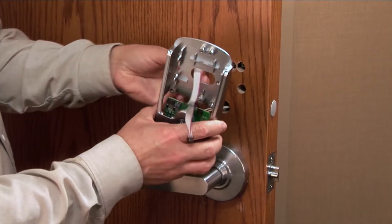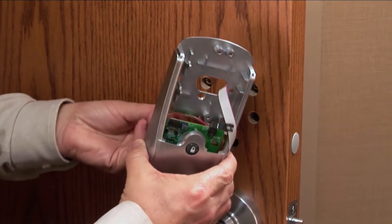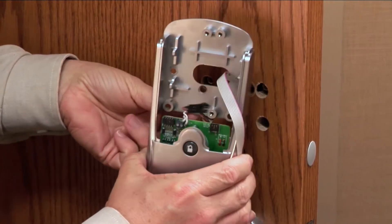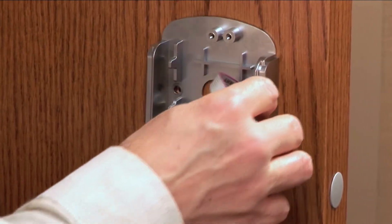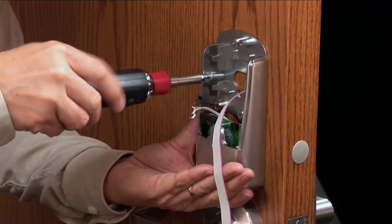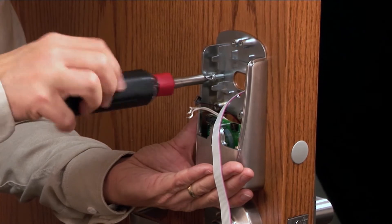Holding the inside assembly, route the wires through the corresponding holes. Push the assembly flush to the door, making sure that no wires or cables are pinched. Secure the inside assembly to the door by installing the two screws into the top of the assembly.